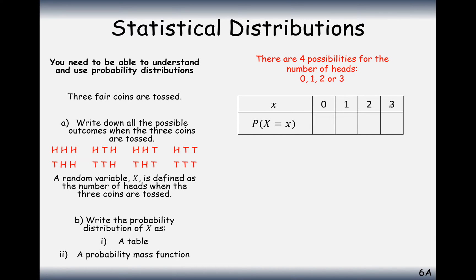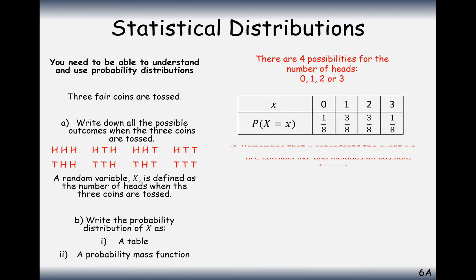The different outcomes for the number of heads are zero, one, two, or three. The probability of flipping zero heads: there's just one of those outcomes out of eight possible outcomes, so it's one out of eight. The probability of flipping one head: we have three outcomes out of eight, so three out of eight. For two heads: again three outcomes out of eight, so three out of eight. The probability of flipping three heads is one out of eight. This is how the probability distribution looks — X is the distribution of the number of heads tossed out of three coins.